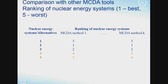For example, here we show a result where the last two alternatives — five and four — may change positions, but within the previous illustration they are practically indistinguishable. So we can estimate this as a good, stable result.